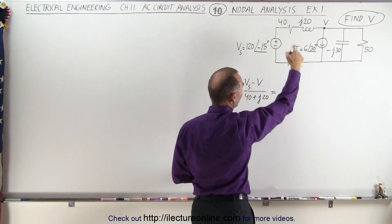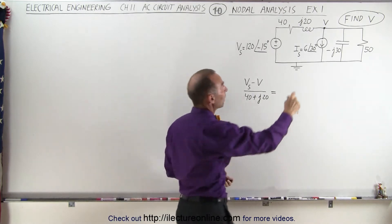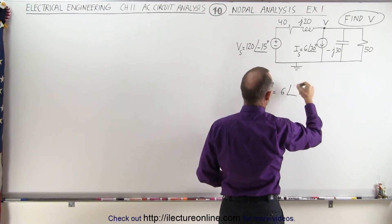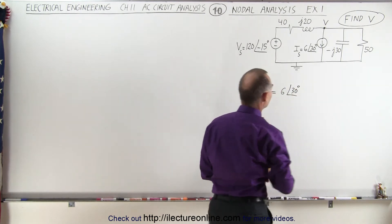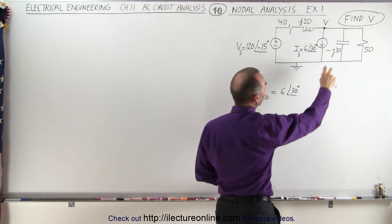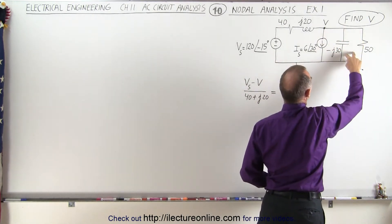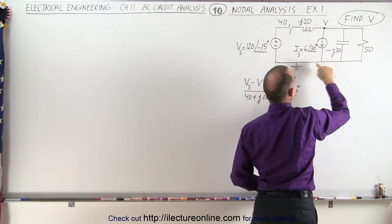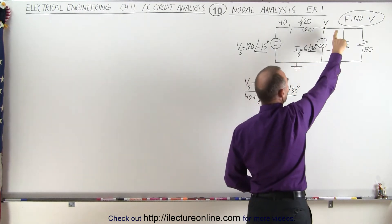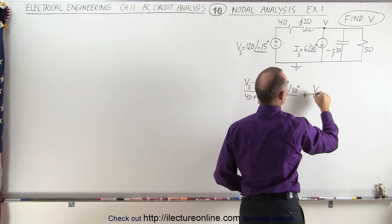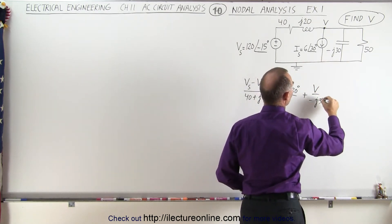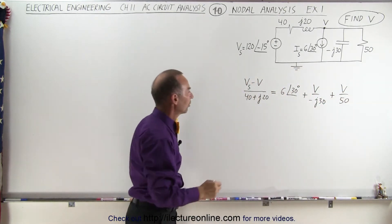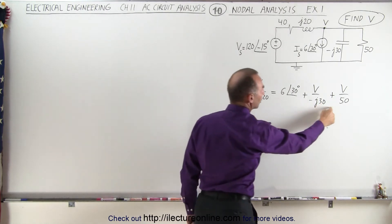And that has to equal all the currents leaving that node. The first current is easy — we have the source current right here, so that would be equal to I sub S, or six amps with a phase angle of 30 degrees. And then we have two currents flowing through these two branches. The difference between this point and this point would be the voltage at the node, and since this is connected to ground, the difference is V. So we have plus V divided by minus J30, and then plus V divided by a 50 ohm resistor.